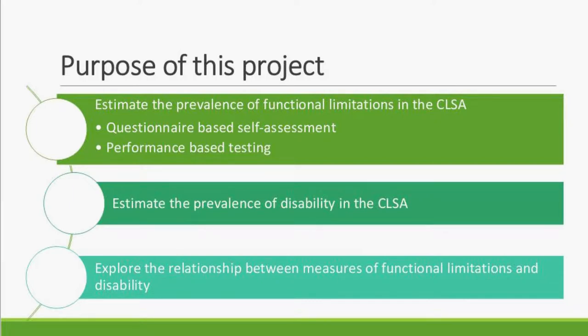We had three primary goals. The first was to estimate the prevalence of functional limitations in the CLSA, both in the comprehensive cohort and the tracking cohort — measured differently between the two, with a questionnaire-based self-assessment in the tracking cohort and performance-based testing in the comprehensive cohort. Second, we wanted to estimate the prevalence of disability in the CLSA, and third, to explore the relationship between the measures of functional limitations and disability.